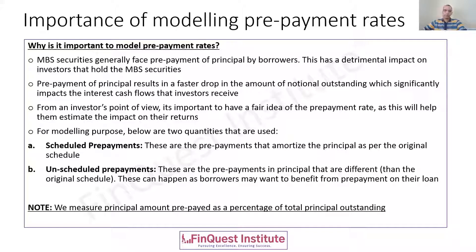It is observed that prepayment of principal happens fast. Whenever prepayments occur quickly, that results in a diminishing principal. If the principal amount is reducing faster, that naturally impacts the overall interest calculation — the interest calculations are going to get curtailed compared to the earlier loan life, because if the loan amount is being prepaid earlier, there is a chance of saving on interest. This is something that impacts investor returns.